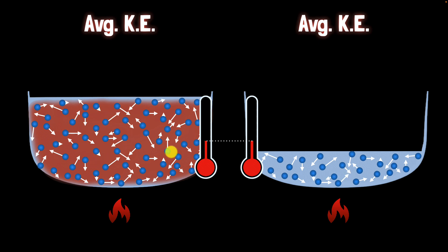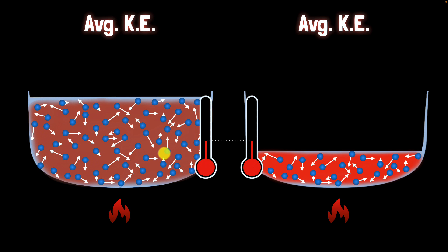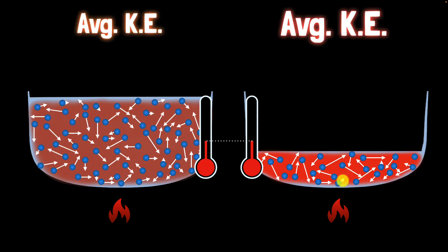But what about the smaller vessel? That same thermal energy is distributed among fewer molecules. Just like how if you take that same cake and distribute it among very few kids, each kid will get a big piece. Similarly, each molecule on average gets a big share of that thermal energy. As a result, the average kinetic energy over here ends up becoming a lot more compared to the larger vessel, because there are fewer molecules and each one gets a bigger share on average.